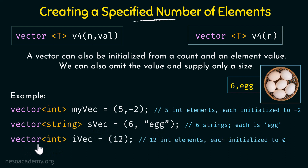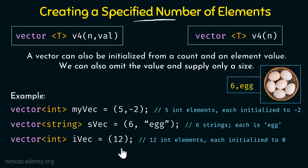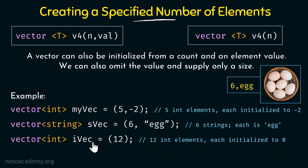Next we have a vector ivec of type integer where within parentheses we just specify 12. We have omitted the value and are supplying only the size. This means there are 12 integer elements in ivec and since we have not specified values for those elements they will all be initialized to 0. So we have 12 elements initialized to 0 in vector ivec.